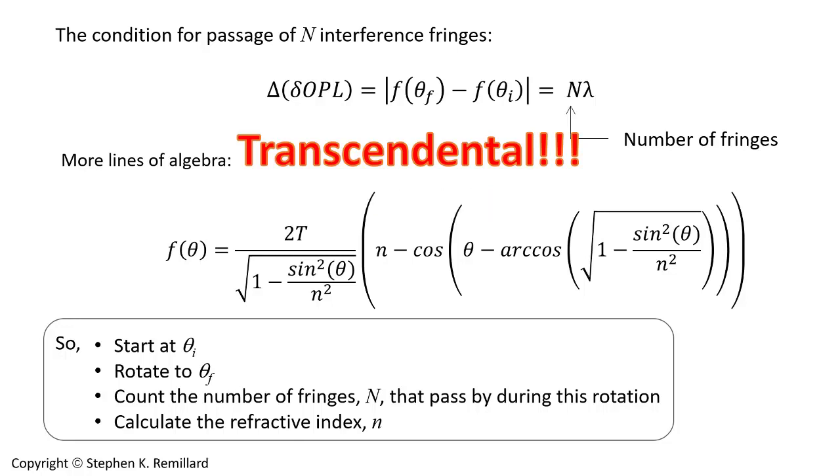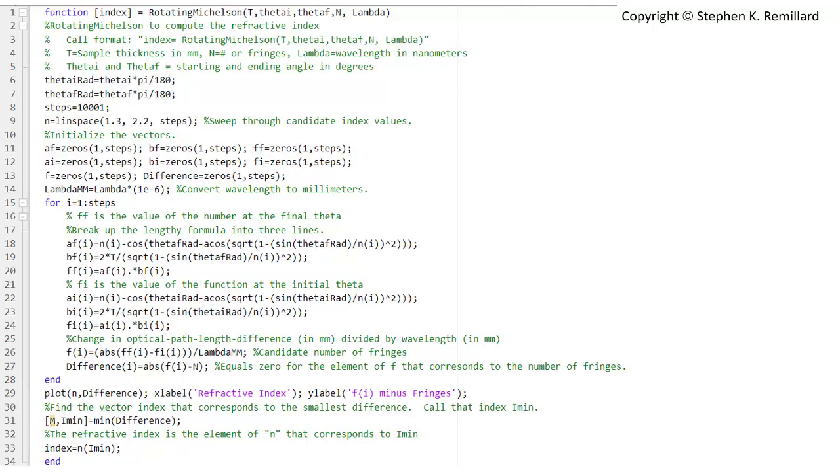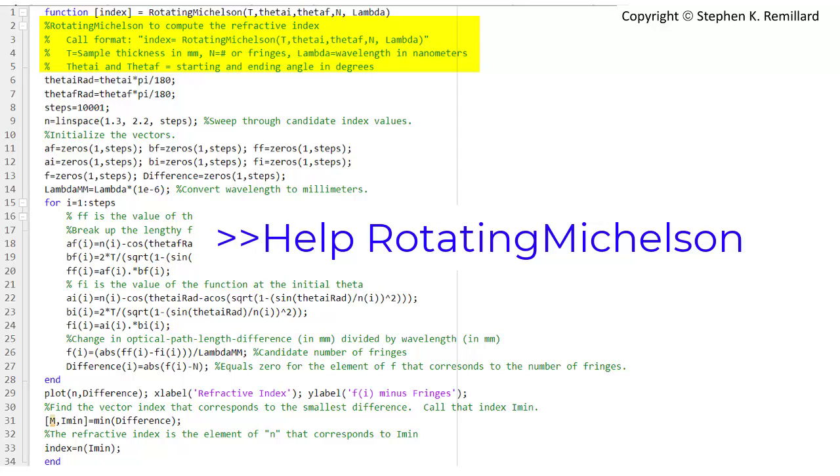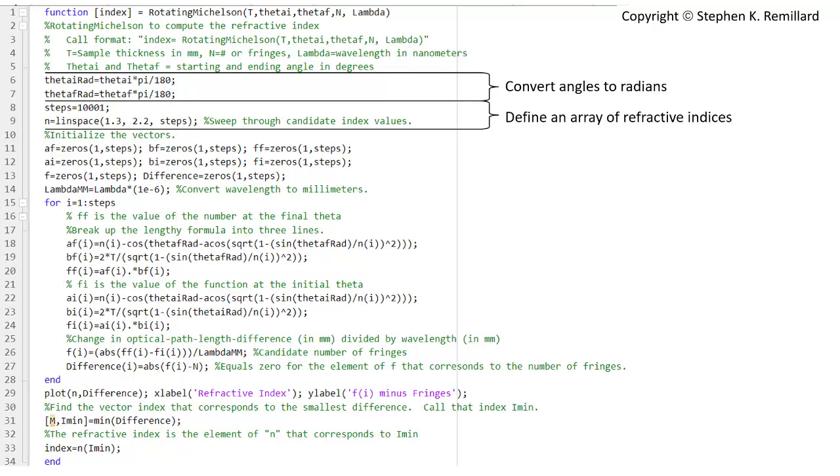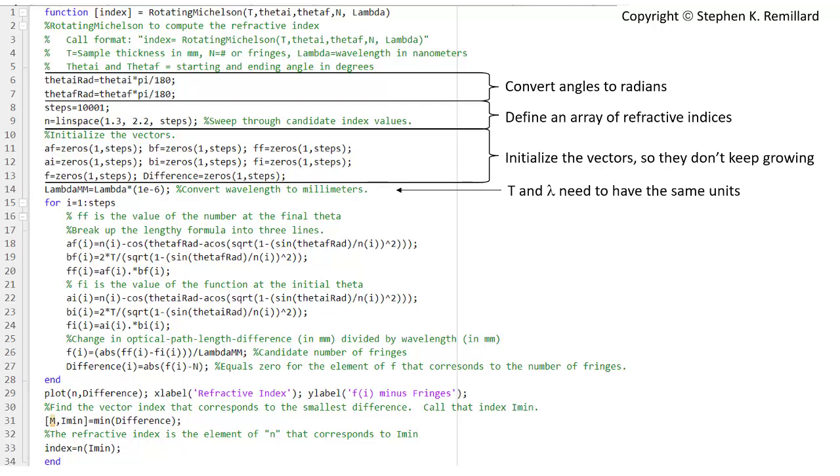Basic approach is measure the number of fringes, big N, and then calculate what big N lambda should be for a whole table full of little n values. And find the value of little n that best matches N lambda. I have this little MATLAB code that pulls off that stunt fairly well. First, the user will input the thickness of the glass and the initial and final angles in degrees and the number of fringes that were observed and the wavelength of the laser. If you type help rotating Michelson, it'll print this information. First, convert the angles into radians. And we're going to do 1001 steps. Define a whole array of refractive indices, n, using linspace. Ranging from 1.3 to 2.2 in 10,000 steps. There's going to be several vectors, and they should all be initialized. They don't have to be, but it makes the code run more efficiently because then the vector size doesn't keep changing. The thickness and the wavelength have to be in the same units. So let's convert wavelength from nanometers into millimeters.